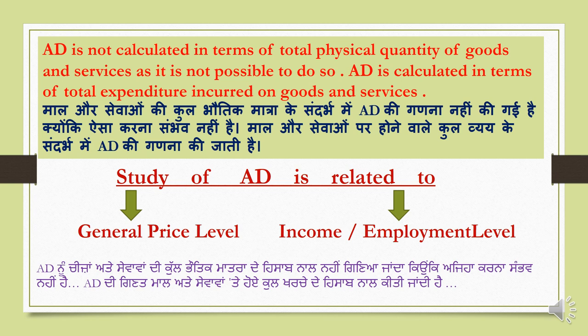Why is it not possible to measure in physical quantity? Because we can't measure the quantity of services provided by the service sector. For example, we can't say how much service a doctor provides — 3 quintals, 10 tons? How much service does a lecturer provide — 3 meters? No, it is not calculable or measurable. So we keep this in mind.